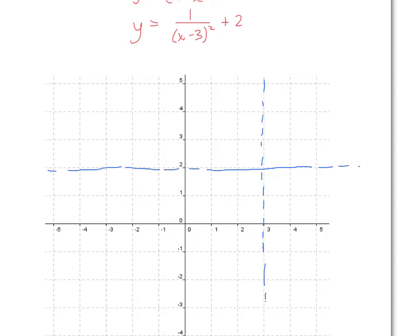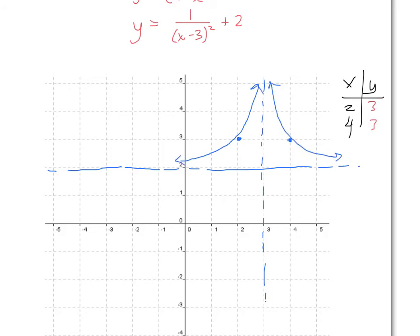If you're not sure, you can always plug in values — one on each side of the vertical asymptote. So at x equals 2 and x equals 4: plugging in 2 gives (negative 1) squared equals 1, so 1 over 1 is 1, plus 2 is 3. You get the exact same value if you plug in 4. So you get 3 on both sides. This graph is very similar to the first one — it's simply the original graph 1 over x squared, translated 3 to the right and 2 up.